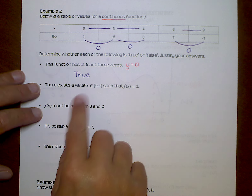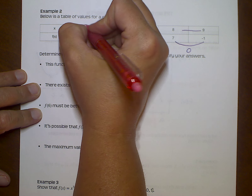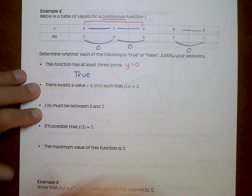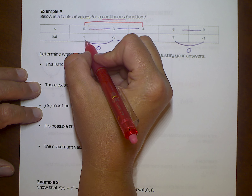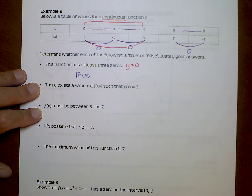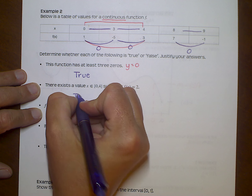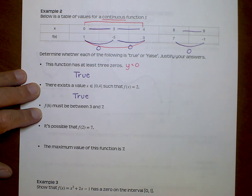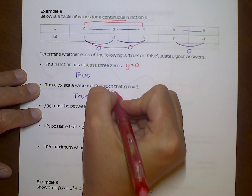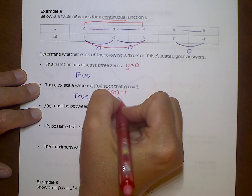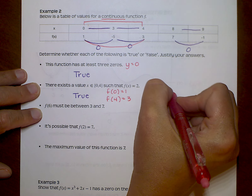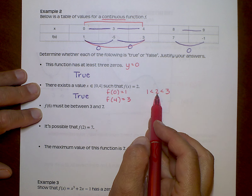There exists a value X on the interval zero to four such that F of X equals two. Looking at the endpoints on that interval, I'm going from F of zero equals one to F of four equals three. Since two falls between one and three, I would say this is a true statement. Since one is less than two is less than three, that's what tells us we must have an X value that goes with that two.